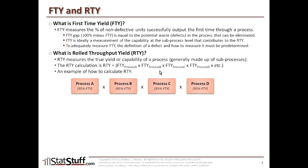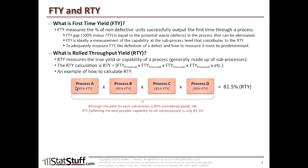If you were to calculate the rolled throughput yield, it would actually be only 81.5%. So although the yield for each of these different sub-processes is 95%, when you multiply each of these out, the rolled throughput yield is reflecting the best possible capability for all of these sub-processes, which is only 81.5%. From a practical example, rather than just saying 95%, let's say there were 100 items that went through process A. If 95% is the first-time yield for process A, that means only 95 of those 100 items were successful the first time and were passed through to process B. Now you only have 95 items instead of 100 as an input to process B. If process B is 95% first-time yield, only 95% of the 95 passed through to it are actually successful — so 95% of 95% is really only about 90, and those 90 are what's passed on to process C, and so on.